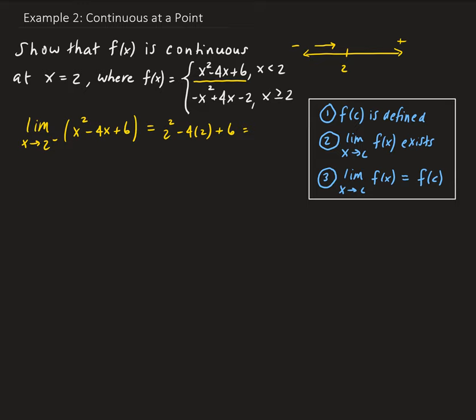Doing a direct substitution, we're going to get 2 squared minus 4 times 2 plus 6. That gives us 4 minus 8, which is 2.